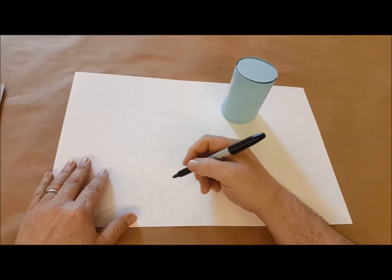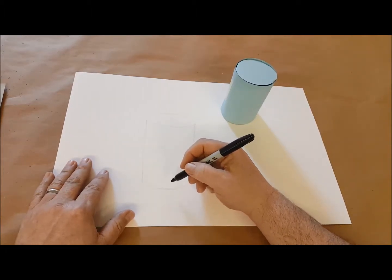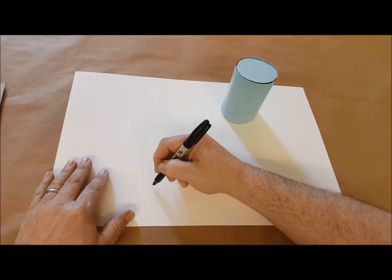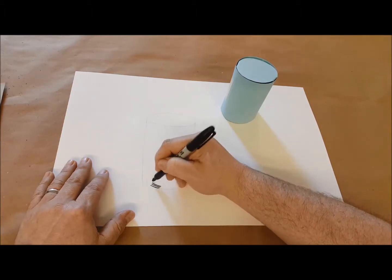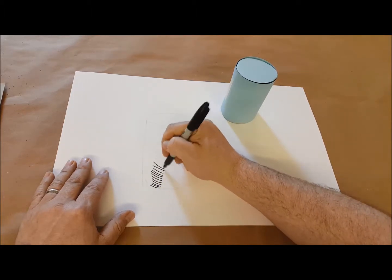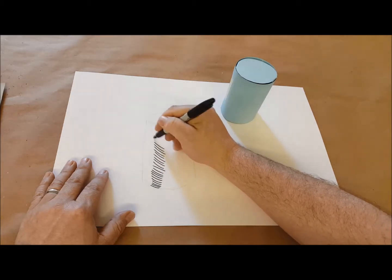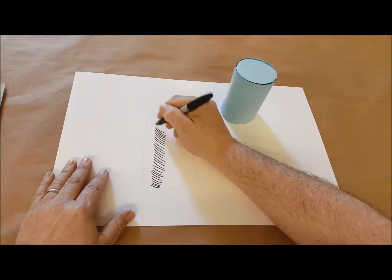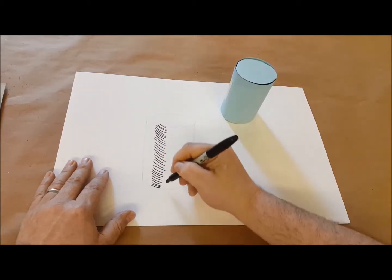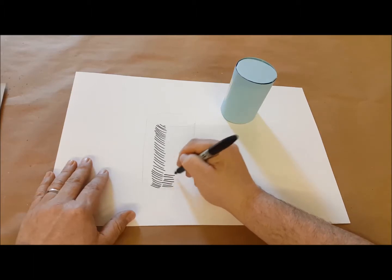So to get our shading going, I'm going to go ahead and give everything one layer of lines that goes in a certain direction. And I'm keeping my lines fairly short and going in the direction that I see the surface going.